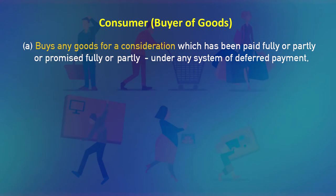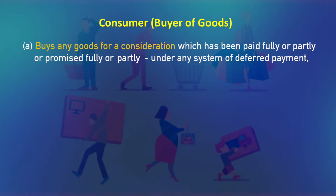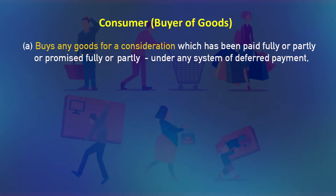Who can be called a buyer of goods? The most important thing when purchasing goods or hiring services is consideration — the price we pay for goods purchased or services hired. This is very important. The consumer is a person who buys goods for a consideration, and that consideration must be adequate. Any inadequate consideration will not qualify under the definition of consumer under the Consumer Protection Act.